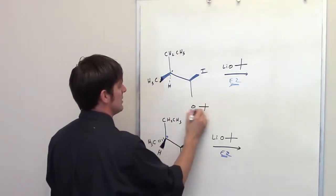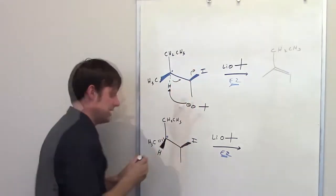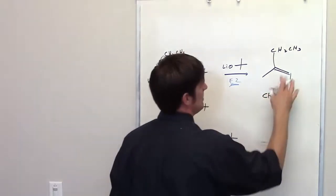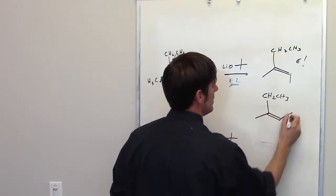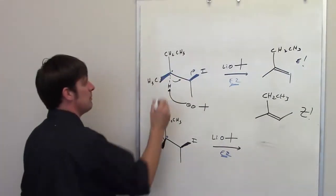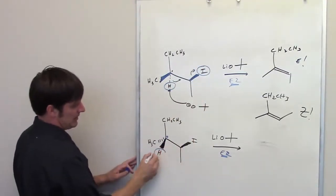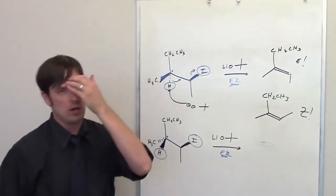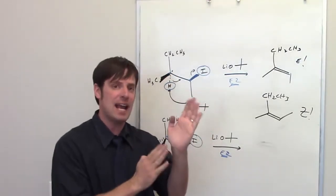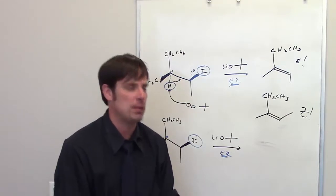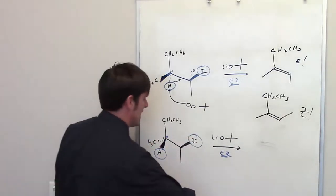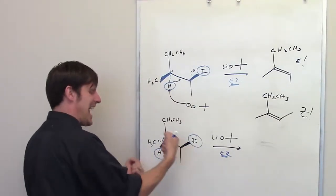The favored product necessitates that the base — in this case tert-butoxide — comes and grabs that hydrogen, dumps the electrons down to form a double bond, and kicks off the iodine. The question is whether it gives the E-alkene, where the ethyl group and methyl group point in opposite directions, or the Z-alkene, where they point in the same direction. The answer depends completely on the hydrogen and the leaving group, which have to be in the same plane and anti to each other — what we call anti-coplanar. The final stereochemistry is determined by how you rotate around the bond to achieve that anti-coplanar arrangement.